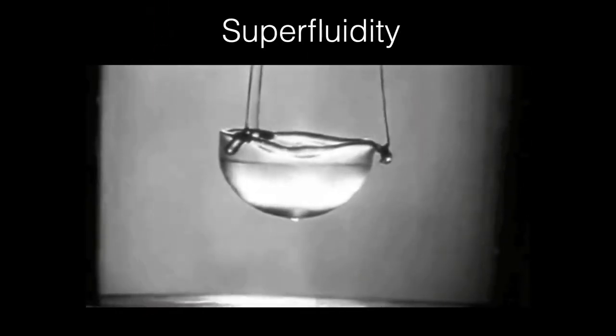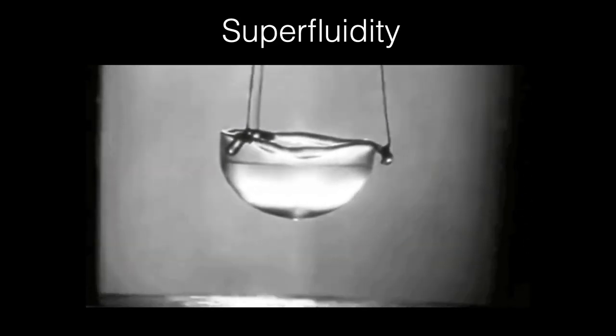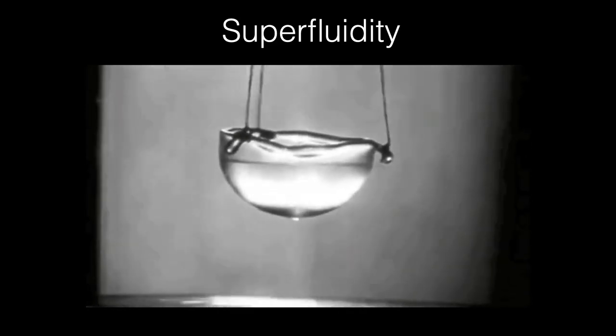If you cool liquid helium to a temperature at or below 2.172 Kelvin, the liquid undergoes a strange transition to something that's called a superfluid. Superfluid helium loses all viscosity and flows with zero friction. This leads to some strange behavior like you see here.